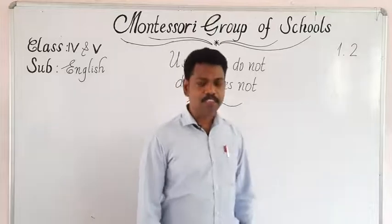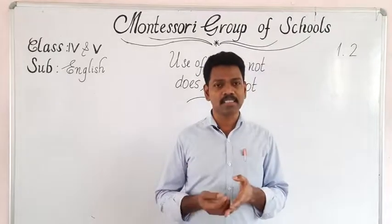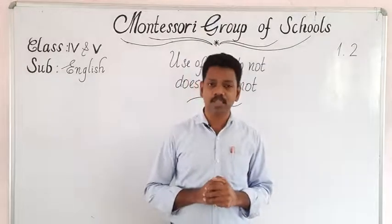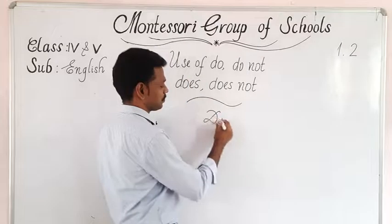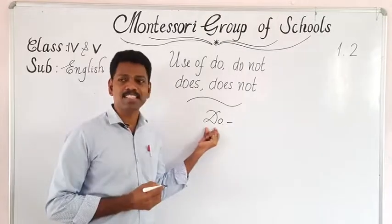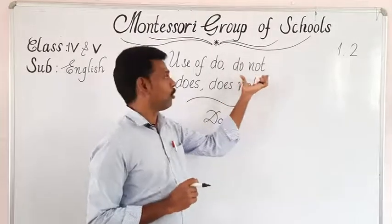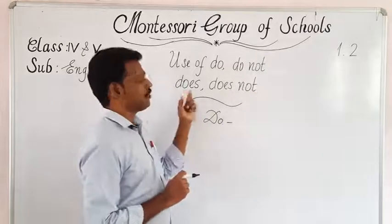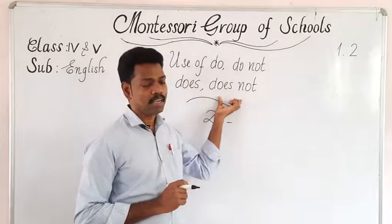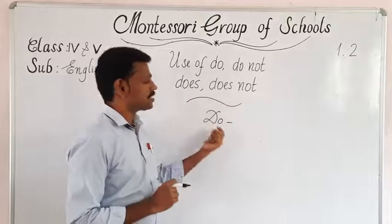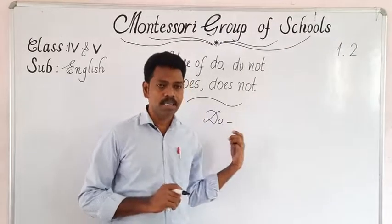First of all, we should know what these words are. The words do, do not, does, and does not are used as verbs or helping verbs. The negative form of do is do not, and the negative form of does is does not. These are the helping verbs used in making affirmative or interrogative sentences.